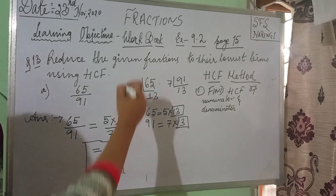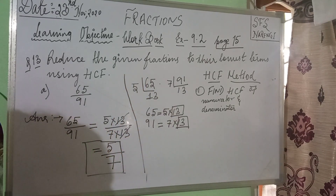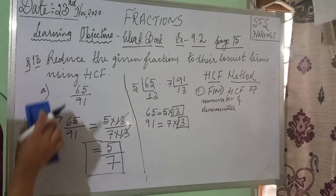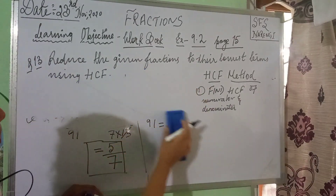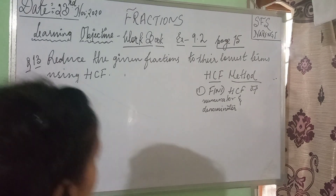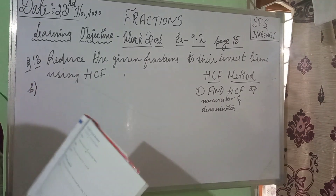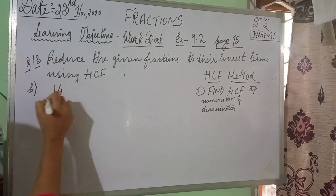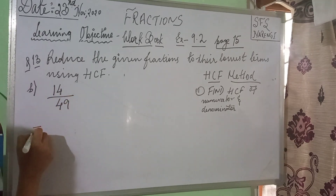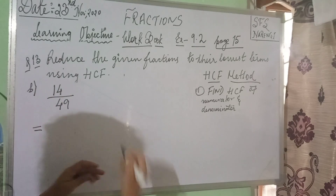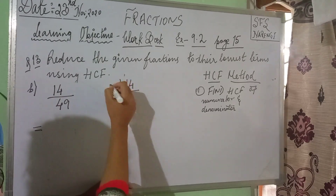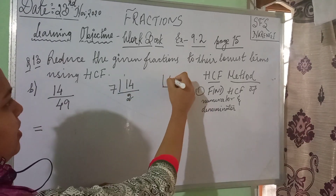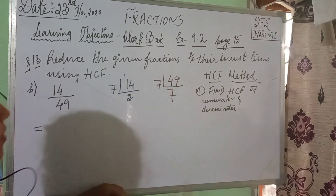I hope it is clear. Let us try question number 13b. In question number 13b, you have to reduce the given fraction 14 by 49 using the HCF method. If you prime factorize 14, you get 7 multiplied by 2. If you prime factorize 49, you get 7 multiplied by 7.